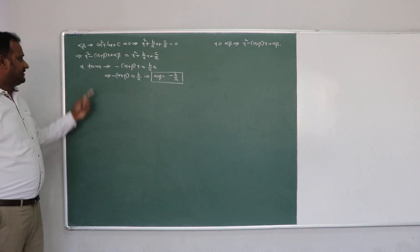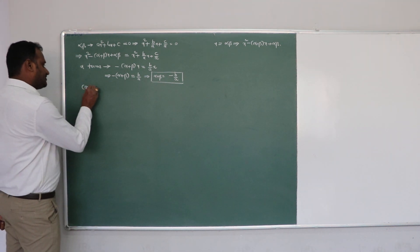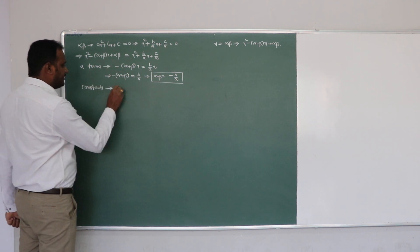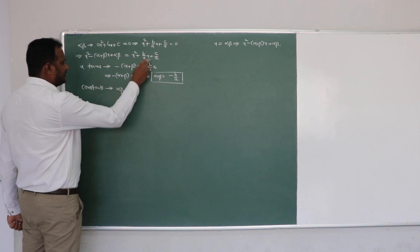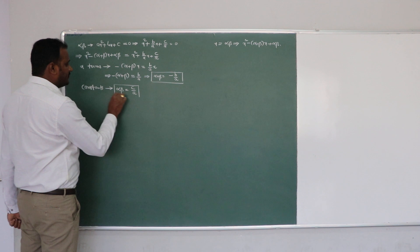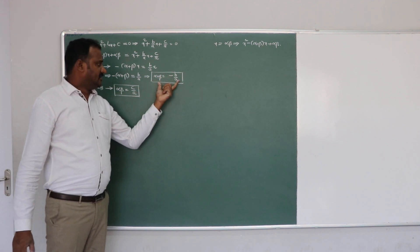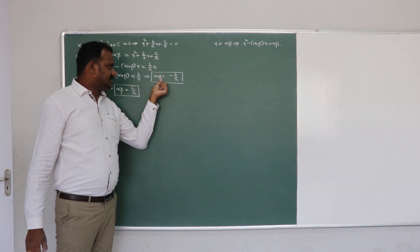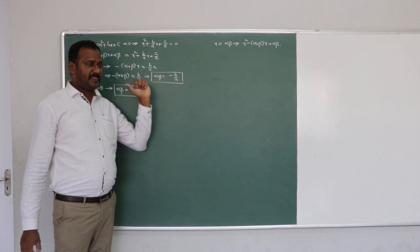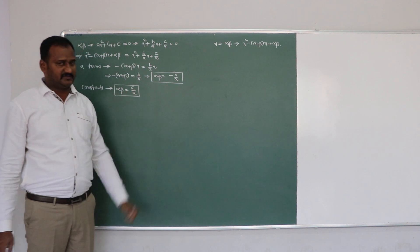You are comparing x terms. And when you compare constants: here the constant is alpha times beta, and there the constant is c/a, which means alpha times beta equals c/a. So alpha plus beta, the sum of the zeros, equals minus b/a, and alpha times beta, the product of zeros, equals c/a.